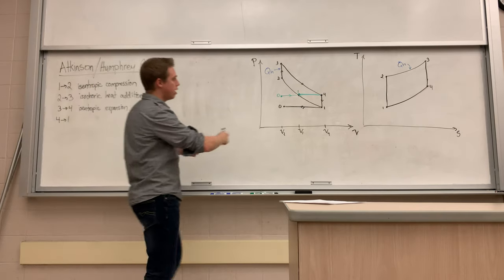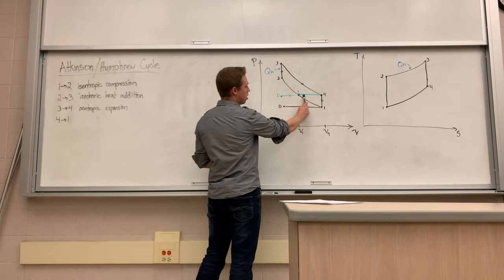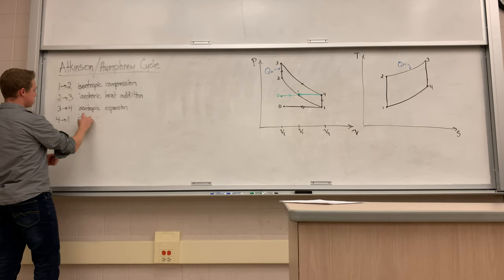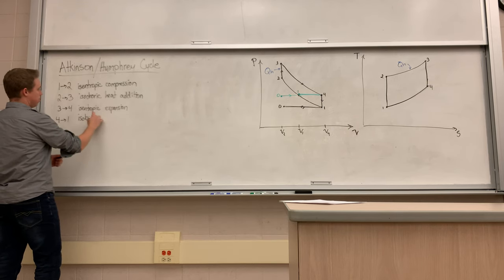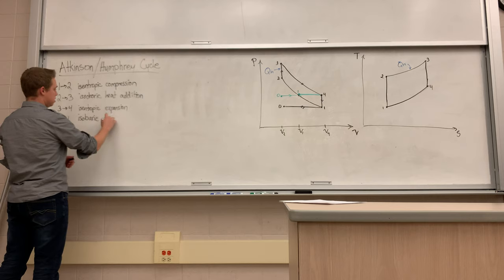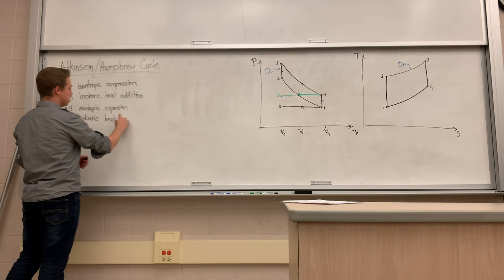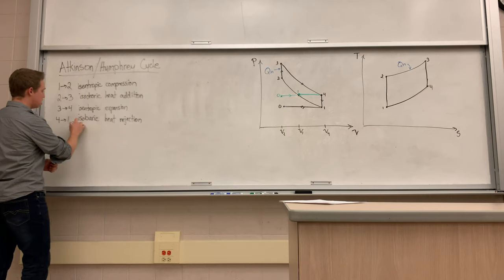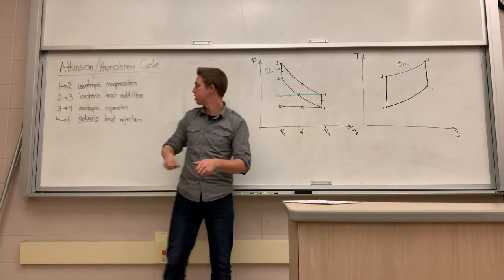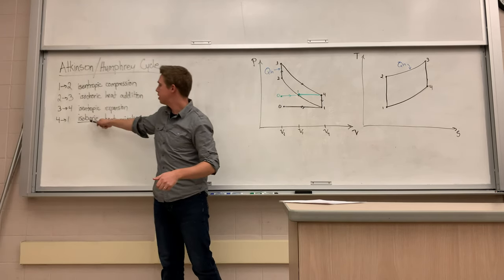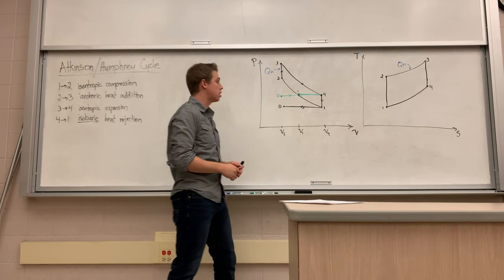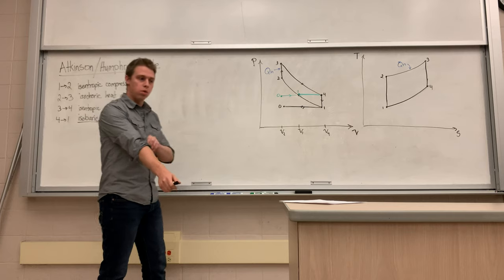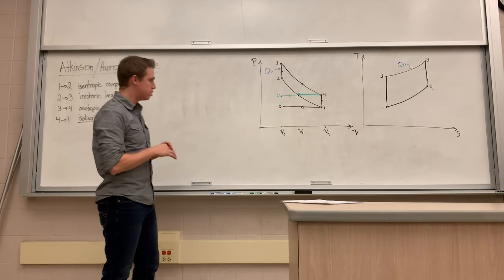So what we've done is changed step four to one from isochoric to isobaric — it is now isobaric heat removal or heat rejection. I'll underline isobaric to emphasize that this is the one thing we've changed from the Otto cycle to get the Atkinson cycle.